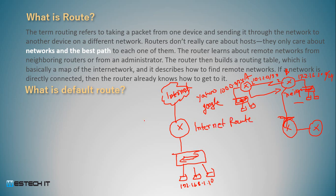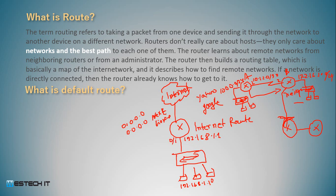This is the internet router. The internet router default gateway is set up as 0.0.0.0, same as 0.0.0.0. The IP test is 192.168.1.1.